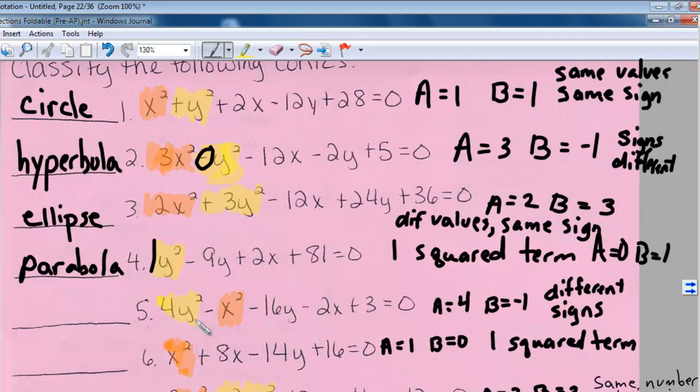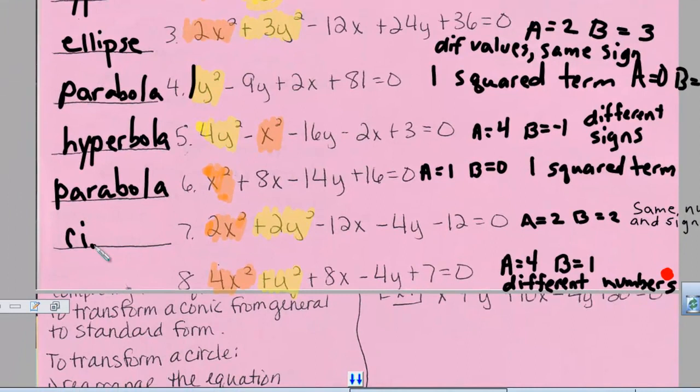Good. Let's see how well you did. Okay, on number five you should have got a hyperbola. Number six should have been a parabola. Number seven should have been a circle. And number eight is an ellipse.